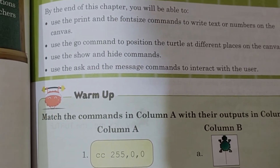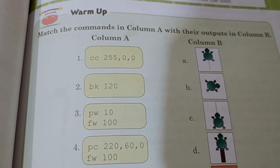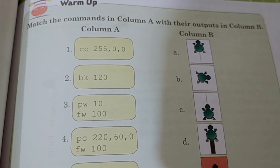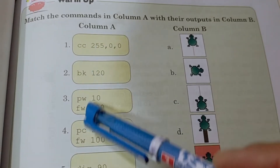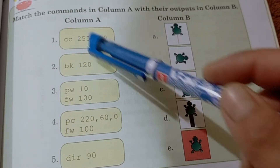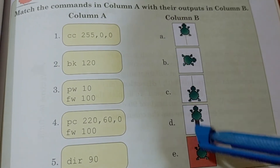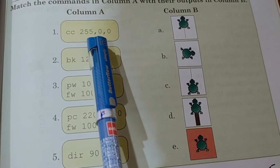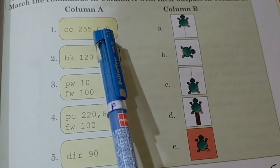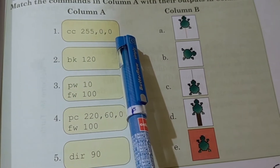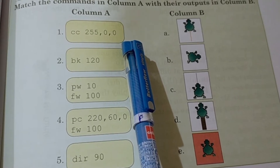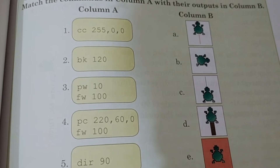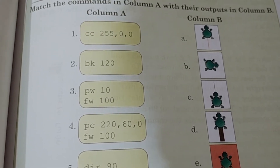First of all, warm-up. In the warm-up, you will match the commands in column 1 with their outputs in column 2. In column 1 you have commands, and in column 2 you have the outputs. So in column 1, you have CC 255, 0, 0.